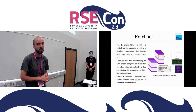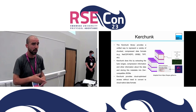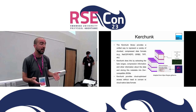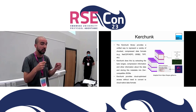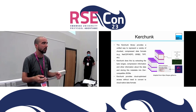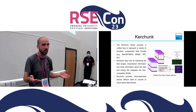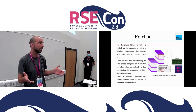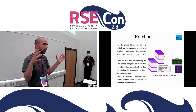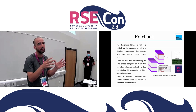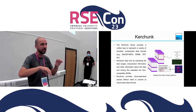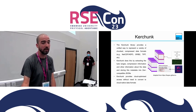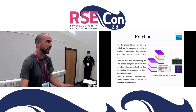An alternative approach is to use the Kerchunk library, which provides a unified way to represent a variety of chunk-compressed data formats common in environmental sciences, such as NetCDF and TIF. Kerchunk does this by extracting byte ranges of the chunks, compression information, and other metadata. This metadata is stored in JSON files that are compliant with the Zarr specifications, enabling all the parallel capabilities that the Zarr library offers. Another advantage is that you can aggregate multiple NetCDF files into a single dataset — and you can even aggregate files that have different data formats, which is quite powerful. The key advantage is that it eliminates the requirement for conversion to a cloud-native format such as Zarr.